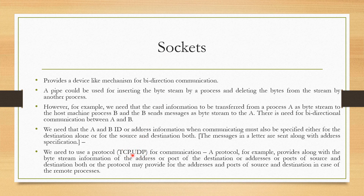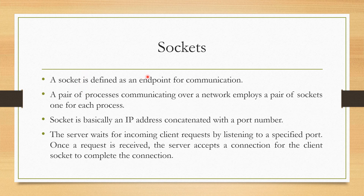Depending upon the type of socket, either of these protocols can be employed. The protocol, along with the byte stream information, is going to provide us with the source address as well as the destination address. Depending upon the framework in which the protocol is working and the type of socket, we are going to enable bidirectional communication between the two processes involved. A socket can be considered as an endpoint for communication, and a pair of processes communicating over a network employs a pair of sockets, one for each process. We need an IP address concatenated with a port number — a socket is defined as IP address plus port number.